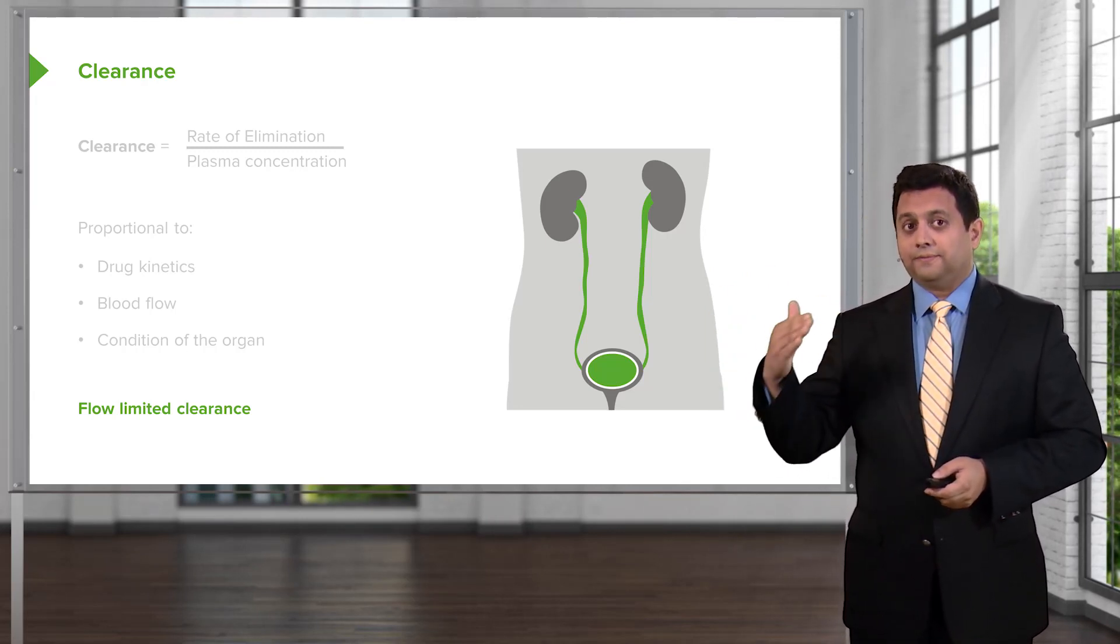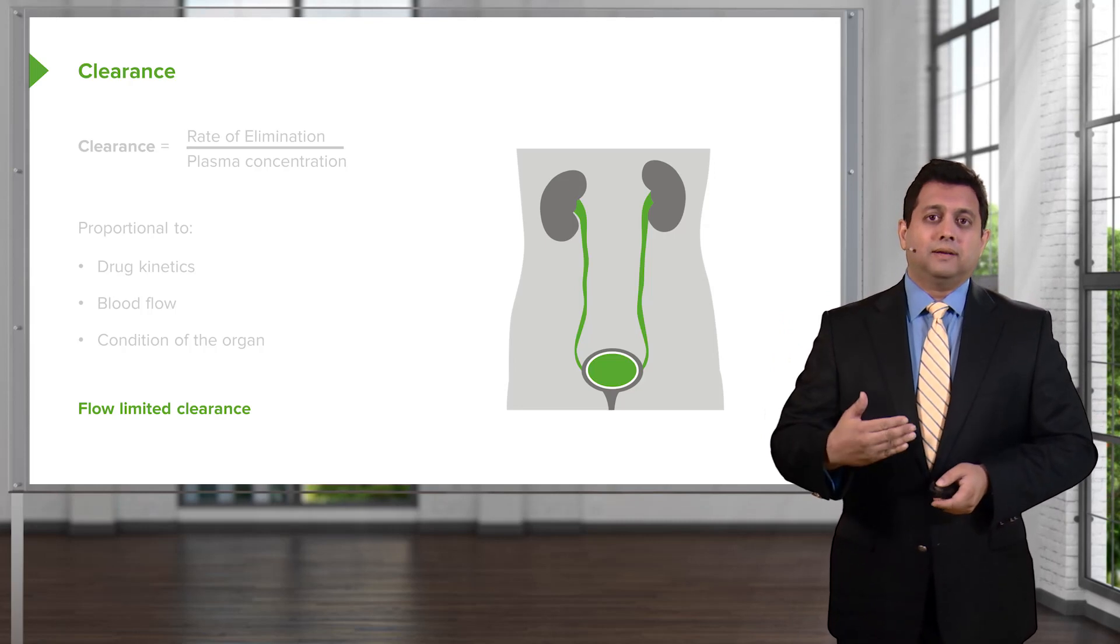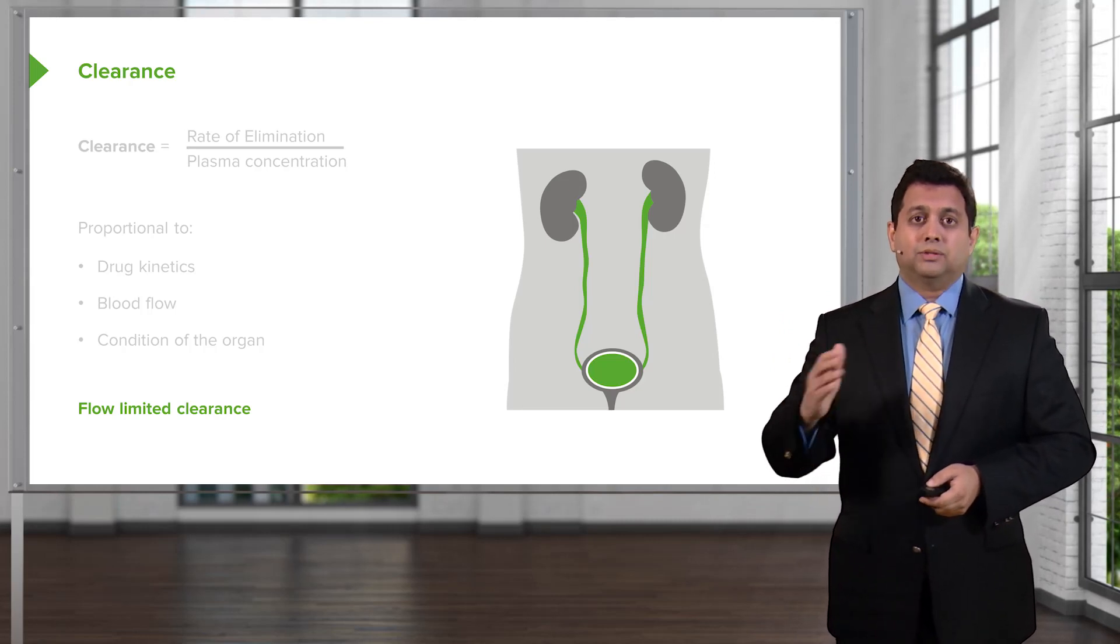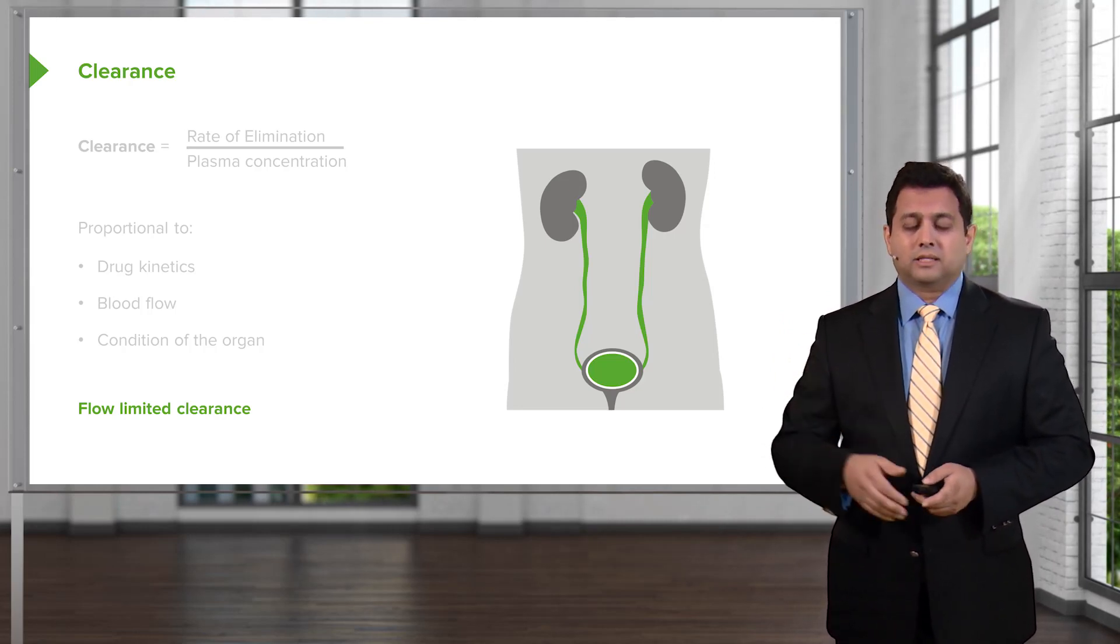If you cut that flow in half, the ability of the kidney to clear drugs is reduced by half, or at least the maximal amount. So the kidney is a classic example of flow-limited clearance.